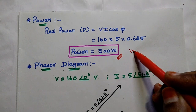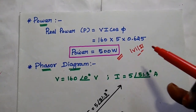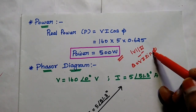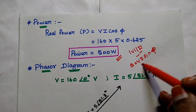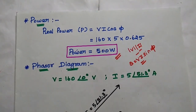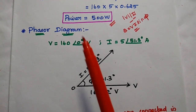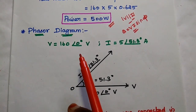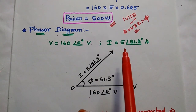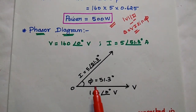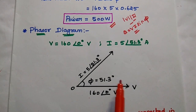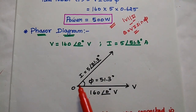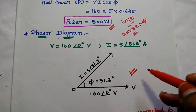For power we consider only the magnitude values, not the phase. In case of reactive power, the formula is Q equals V times I times sin φ — use this only if the problem explicitly asks for reactive power. Then we draw the phasor diagram. The voltage is 160 at 0 degrees; the current is 5 at 51.3 degrees. We draw voltage in the reference direction and the current leads it by 51.3 degrees. This is the phasor diagram for the RC series circuit.